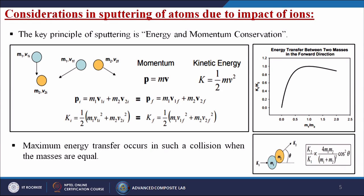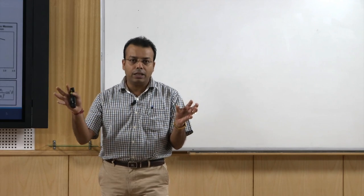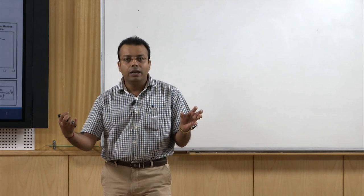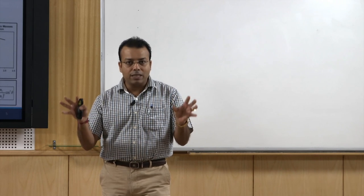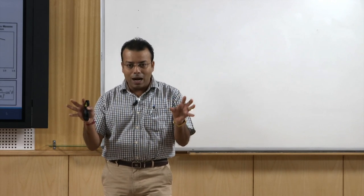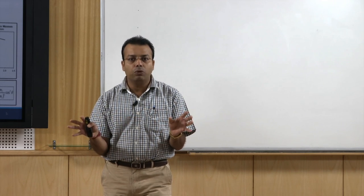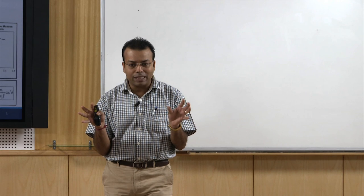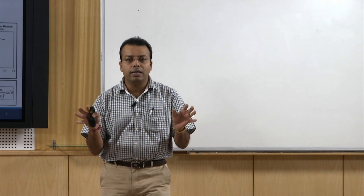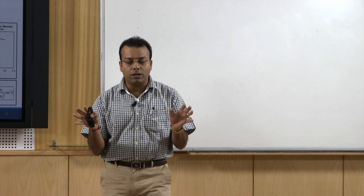What are the considerations in sputtering of atoms due to impact of ions? The key principle of sputtering is energy and momentum conservation. We have two balls in two different colors — one is blue, one is yellow — representing two atoms: one is the argon-plus atom and the other comes from the target material. These atoms have a certain mass. Unless the masses of these two atoms are equal, sputtering is possible; maximum efficiency is achieved when the masses are almost equal.